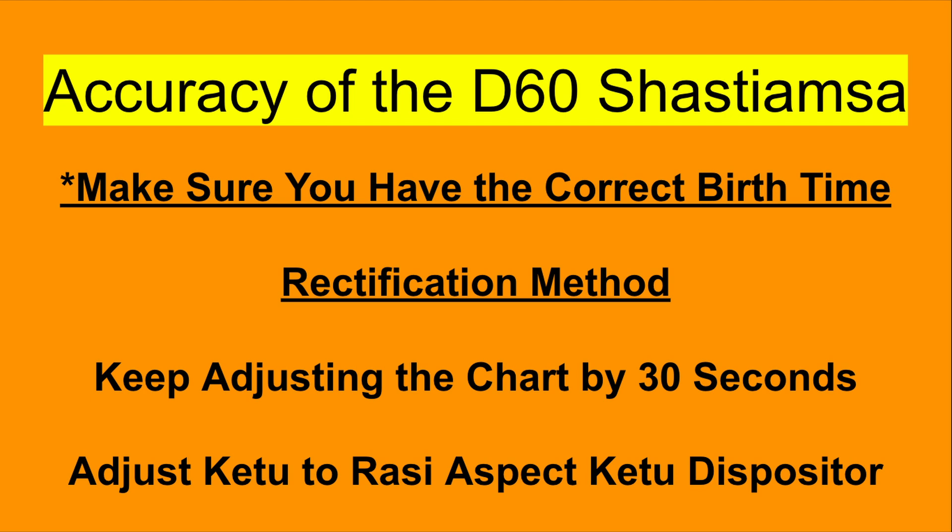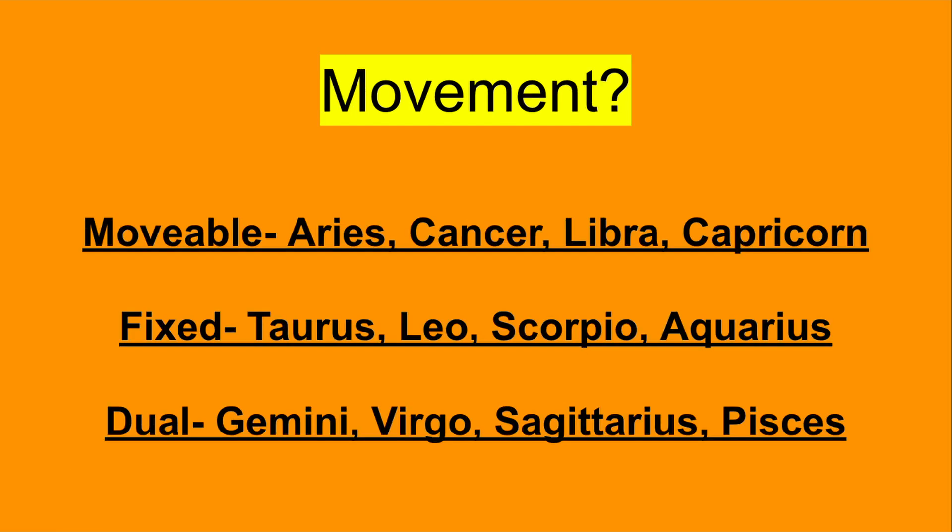The way to do this is to understand Rashi aspects. In astrology, most people use graha aspects — looking at how the planets aspect one another — but signs also have aspects. To understand this, you have to understand the movement or mode of operation of the signs. There are three modes: movable signs, fixed signs, and dual signs. The movable signs are adaptable, changeable, flexible, and constantly in motion. These signs are Aries, Cancer, Libra, and Capricorn. The fixed signs want to stay the same — they are about security and stability. These signs are Taurus, Leo, Scorpio, and Aquarius.